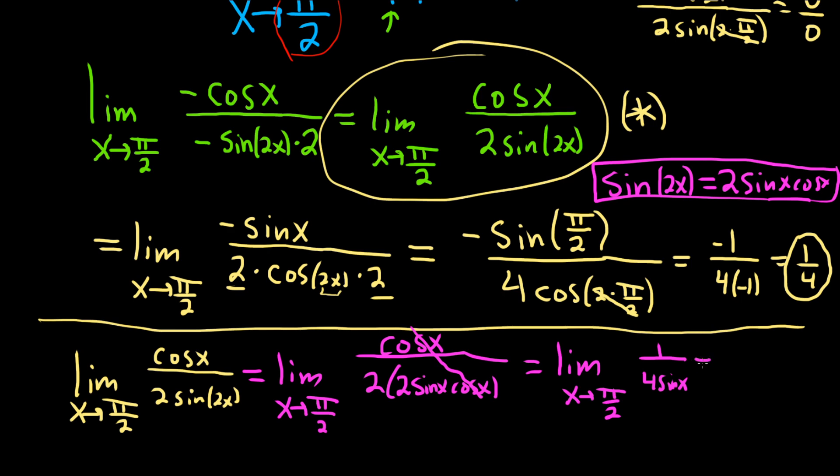Because now when we plug in pi over 2, we drop the limit sign. So we get 1 over 4 times the sine of pi over 2. And the sine of pi over 2 is 1, so this is 1 over 4 times 1. So it's 1 over 4.